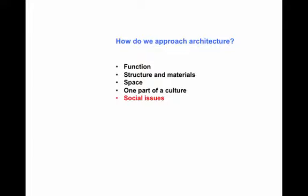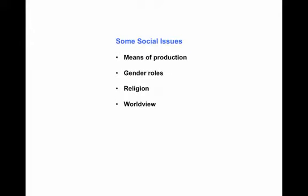How do we approach architecture? Function, structure and material, space — as one part of a culture: architecture, painting, sculpture, literature — but also in terms of social issues. We'll look at some examples of means of production, gender roles, religion, and worldview. Worldview will be the one we concentrate on a bit.